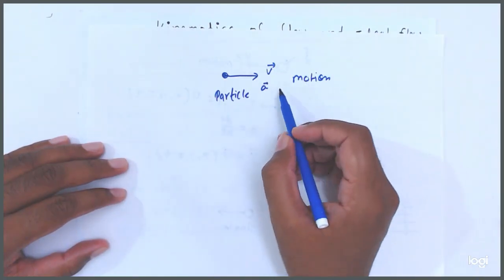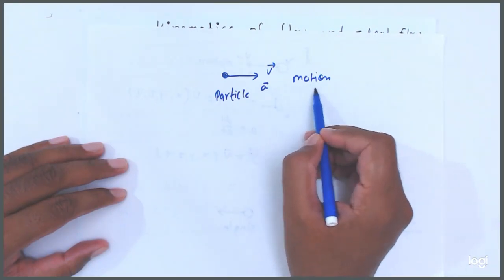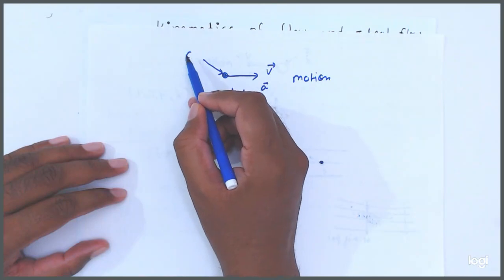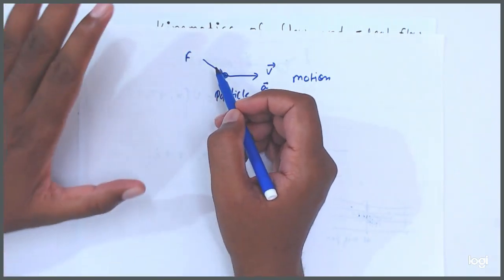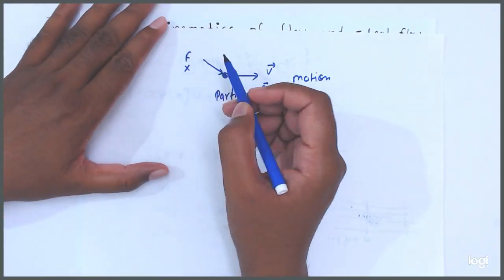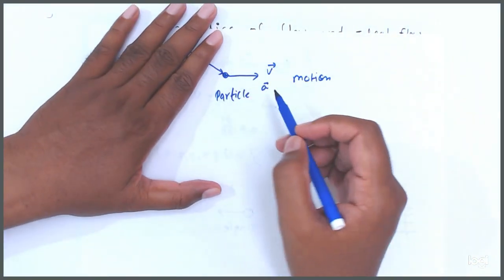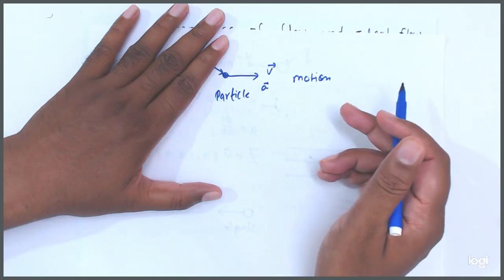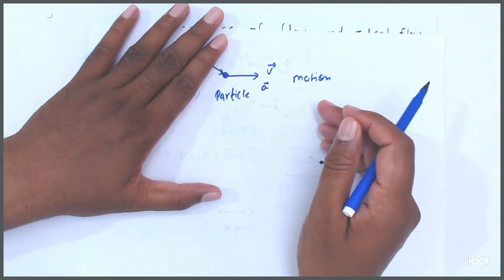So we have to study the motion part. Suppose on this a force is working, but friends, we are not bothered about the force at all. We have to consider only motion part. So this type of study is known as kinematics.